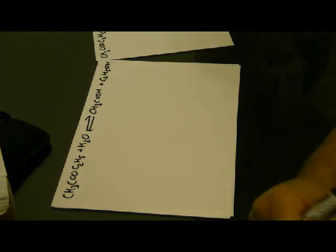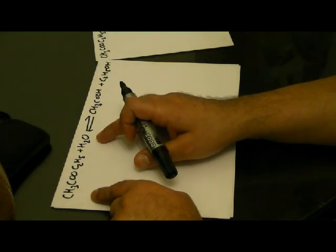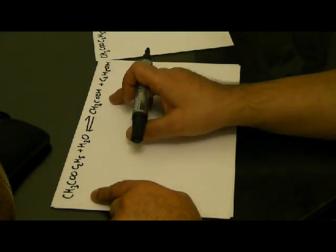We have an equilibrium which starts with ethyl ethanoate and water. It forms ethanoic acid and ethanol.